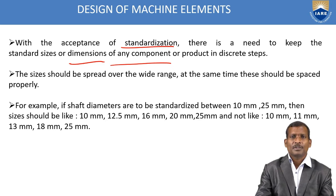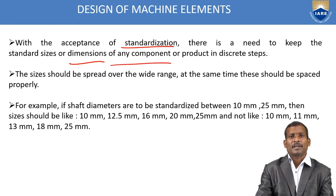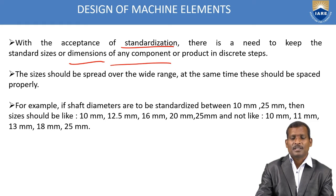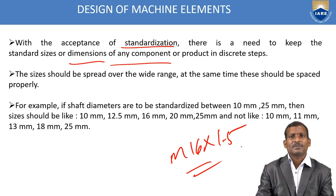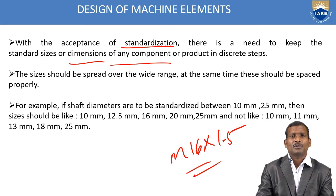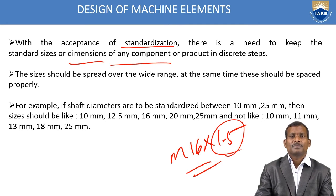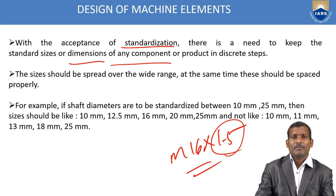For example, bolt M16 — you take an M16 bolt, this is the standard diameter of the bolt. You can write it as M16 by 1.5, where 16 is the nominal diameter and 1.5 is the pitch of the bolt. These types of standard sizes are available.